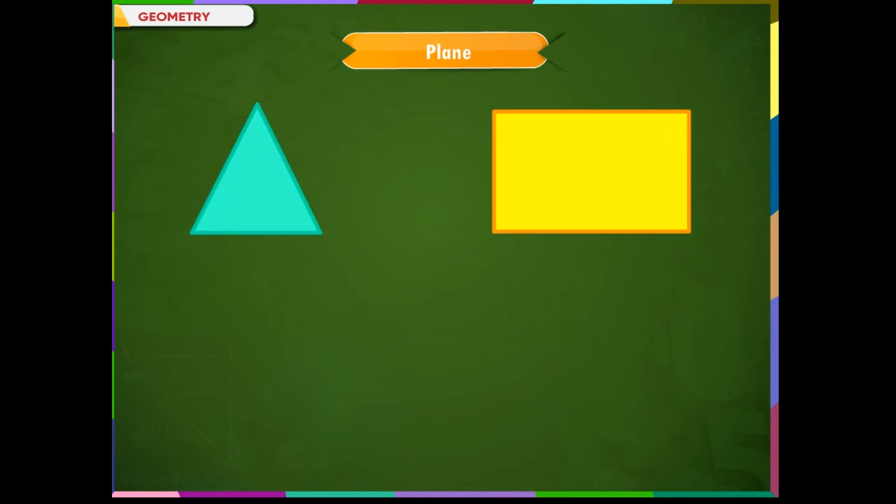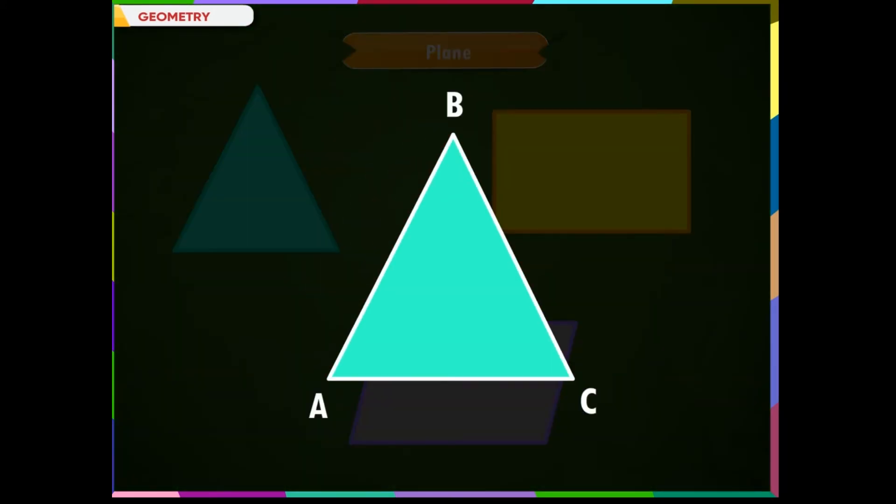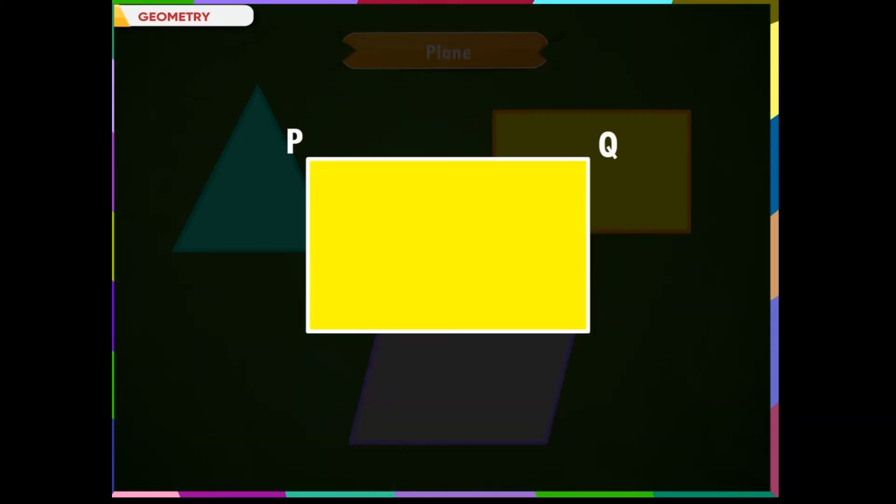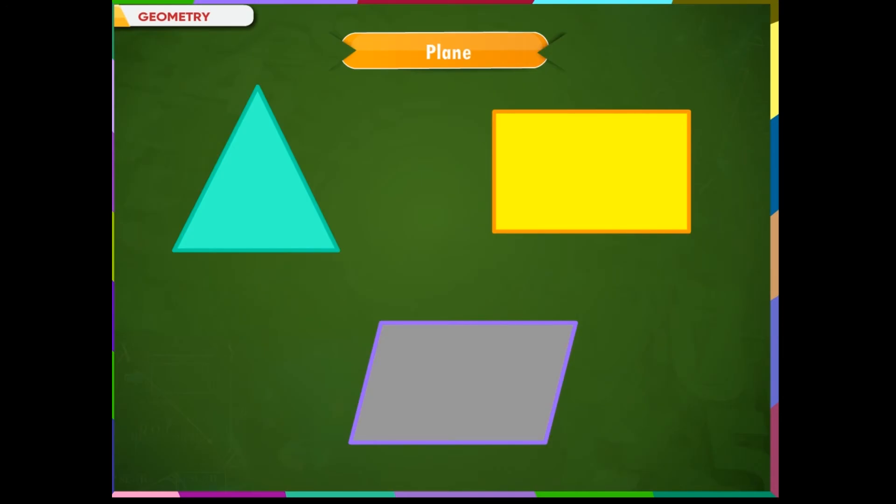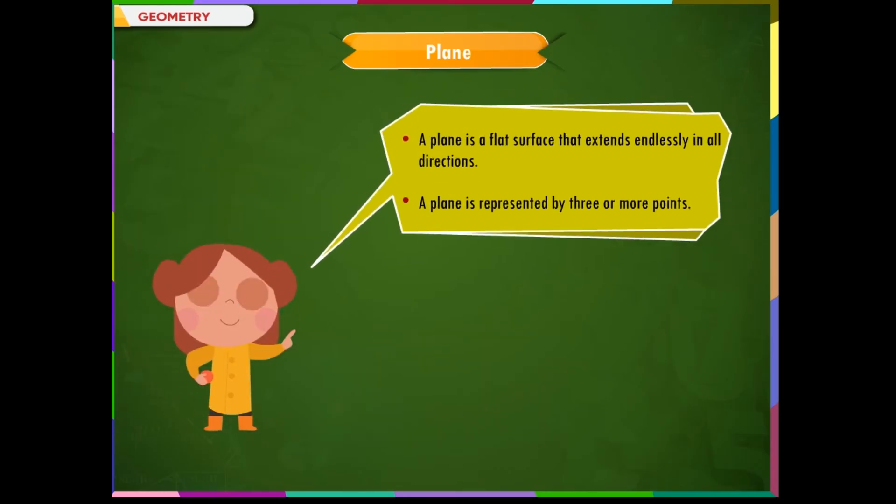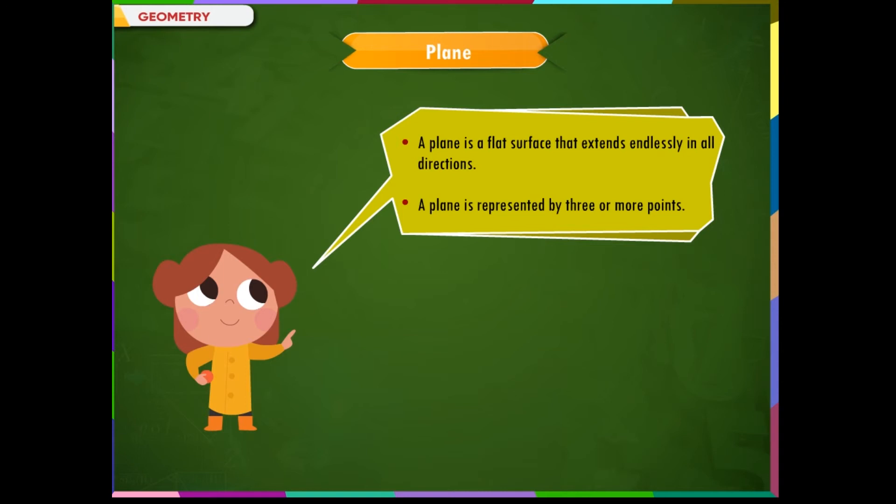It may be represented in the form of a rectangle, triangle, or a parallelogram. We can represent a plane by three or more points which are not in a straight line. Remember, a plane is a flat surface that extends endlessly in all directions. A plane is represented by three or more points.